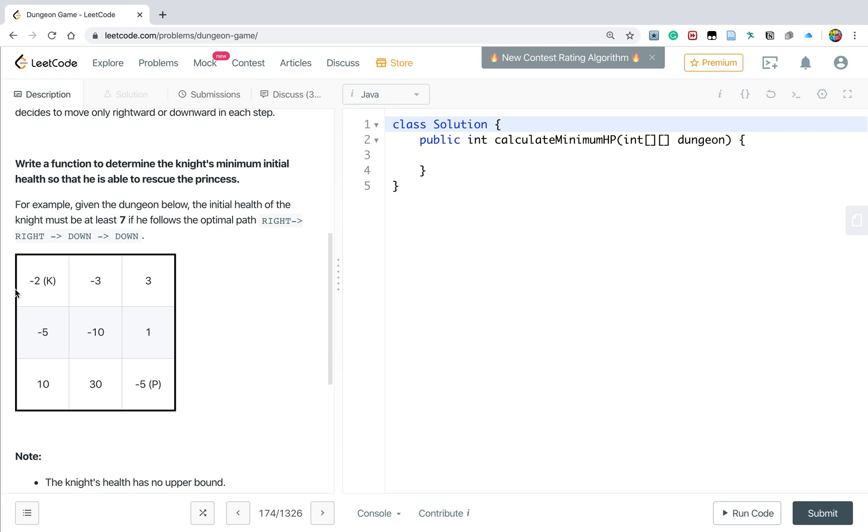At the beginning we have an initial health point. We can either go right or go down, and at each cell it has an integer. We can either increase our health point or decrease our health point. But the condition is that at each cell our health point will at least be 1.